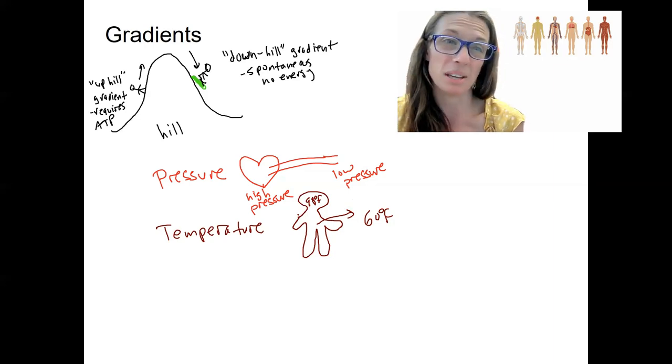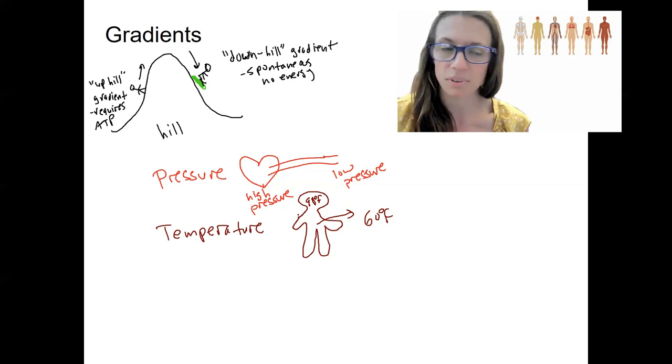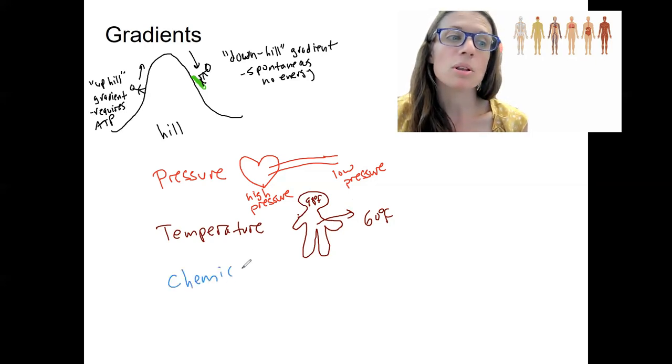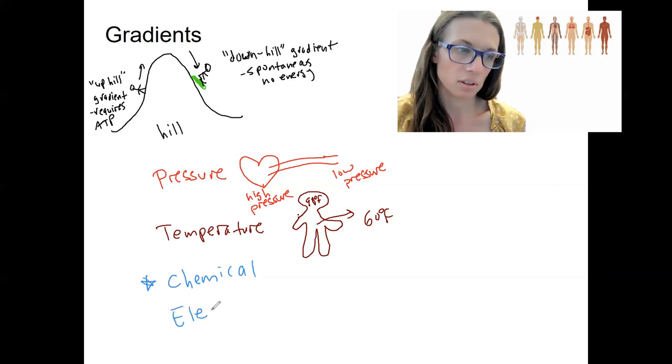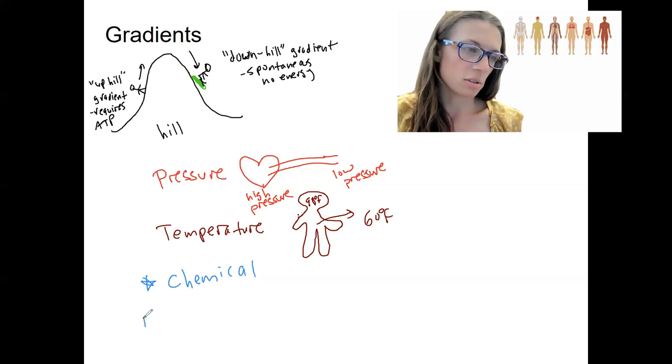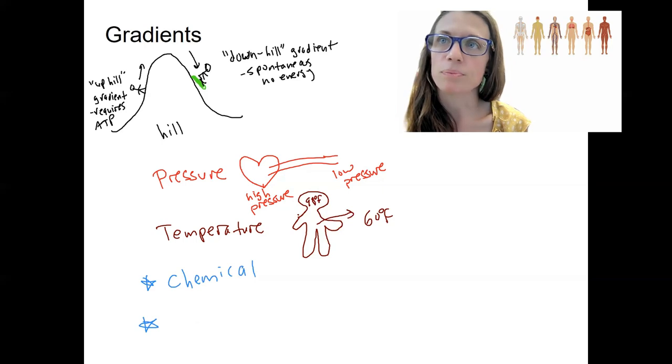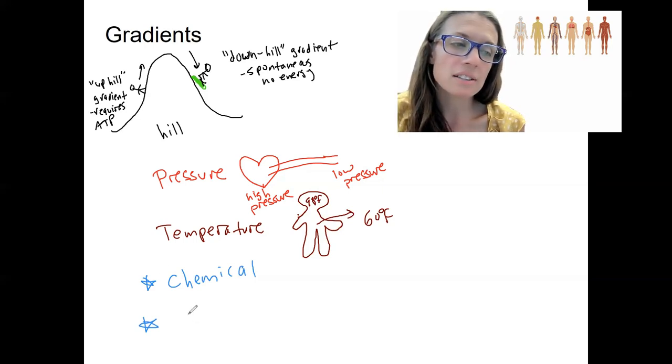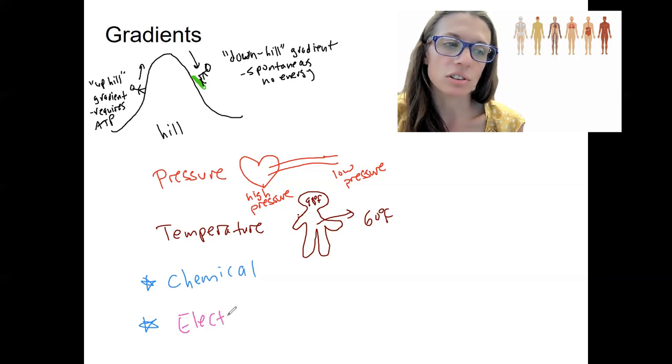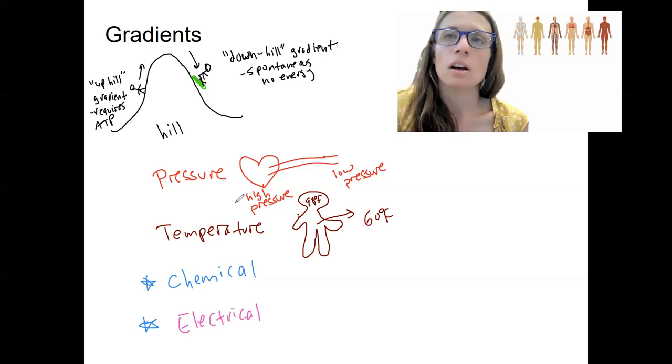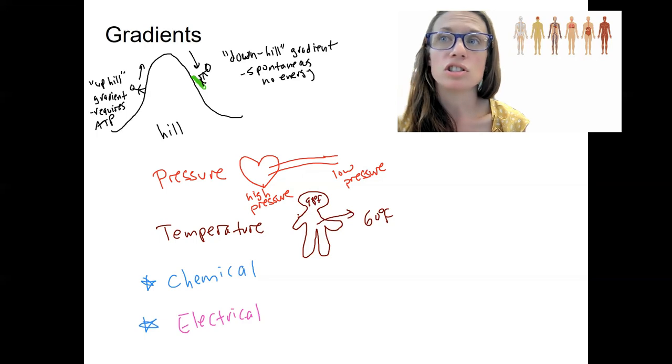Literally the production of ATP produces heat as a byproduct. The last two are going to be the most important for this semester and probably next semester also: chemical gradients and electrical gradients. So a chemical gradient is just the difference in a concentration of a chemical.